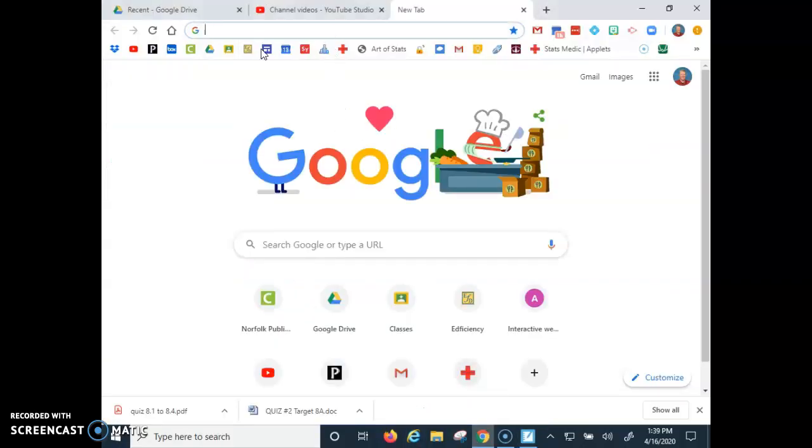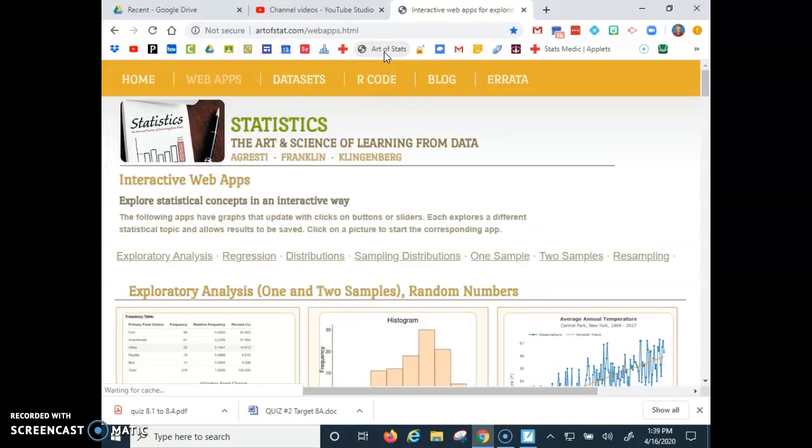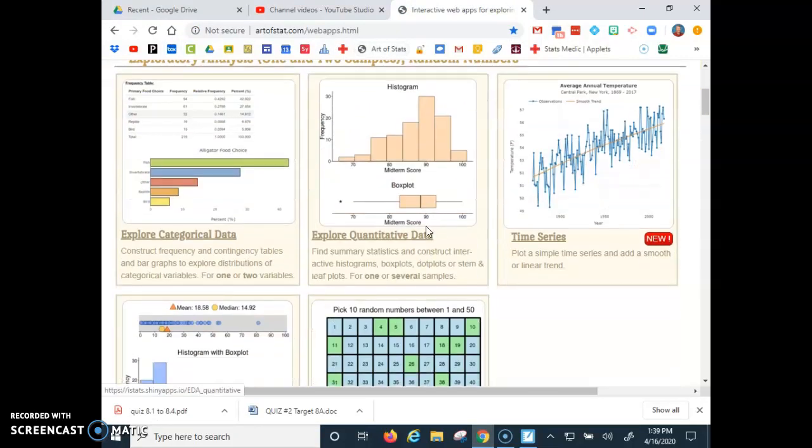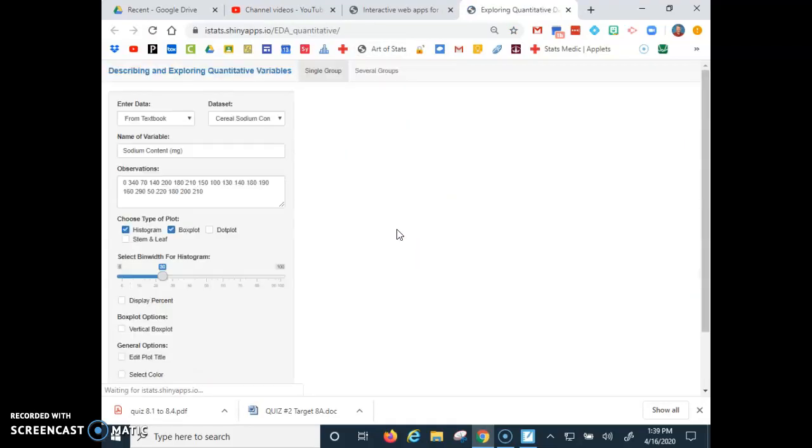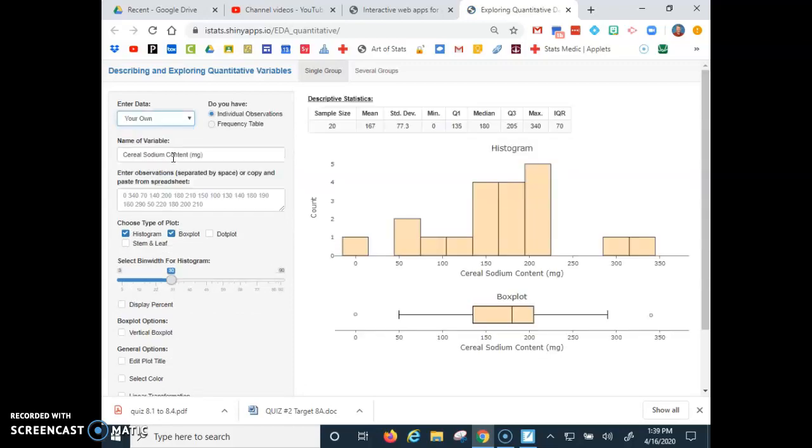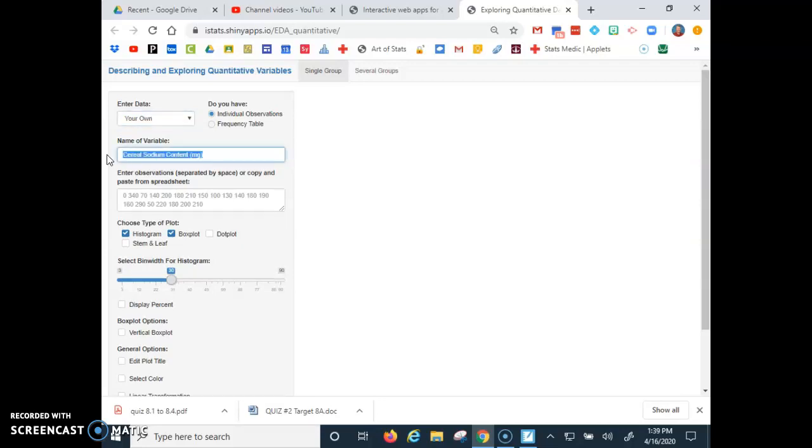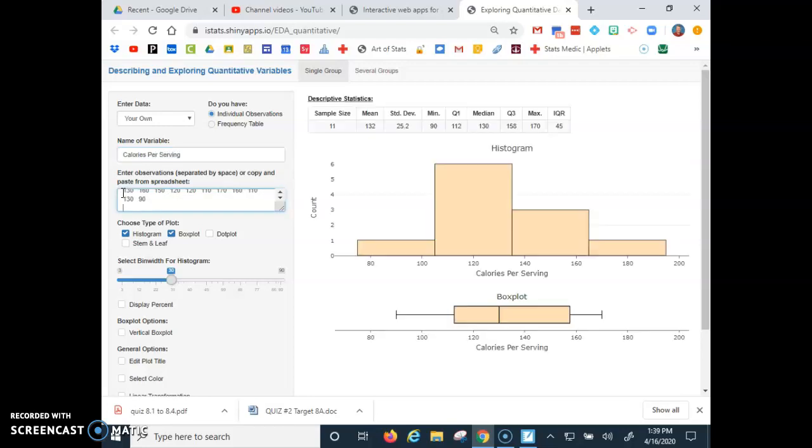We're going to go to our stat app. Since I'm graphing the data, this is quantitative data, so I'm going to paste in our data values. Now if you take a look, it looks fairly symmetric. You look at the box plot, there's no outliers, so I think we're pretty good here.